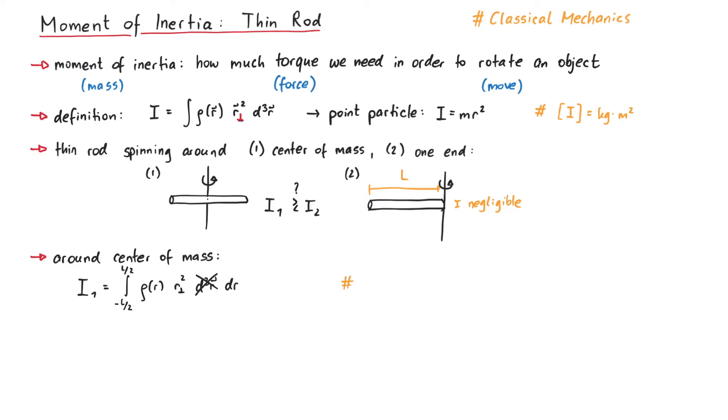The density rho is given by mass per volume, and the rod's volume is just L. Since the density is constant in our example, we can write it in front of the integration.